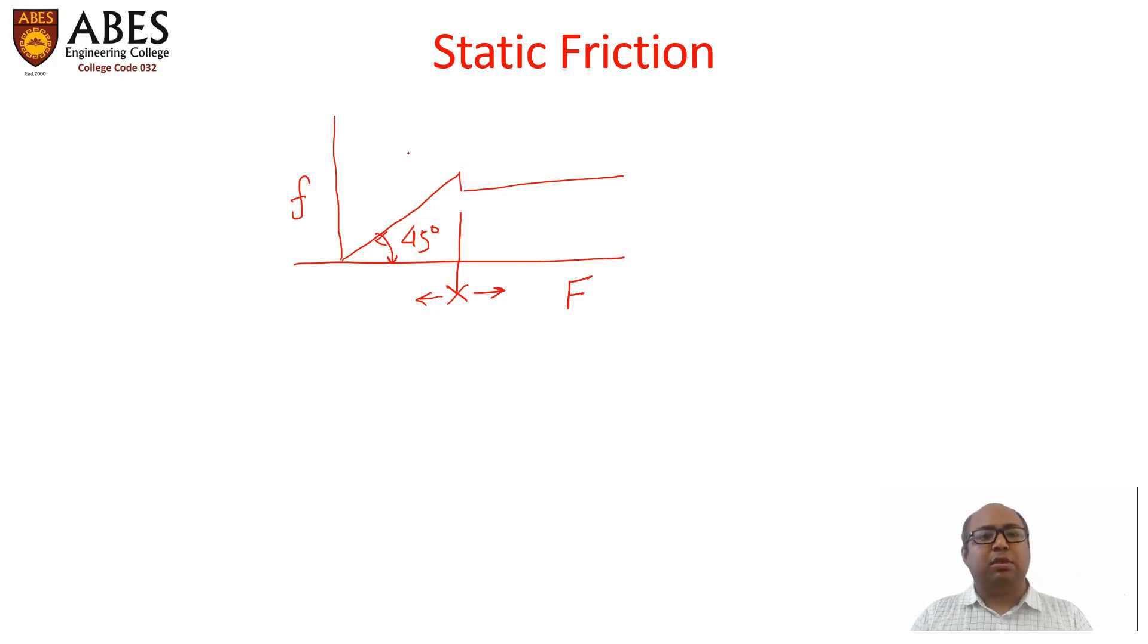The maximum static force will be at this point, which is called limiting friction. This value will be f equals to f limiting equals to mu multiplied by normal reaction, where mu is the coefficient of limiting friction between the two surfaces in contact and N is the normal reaction.